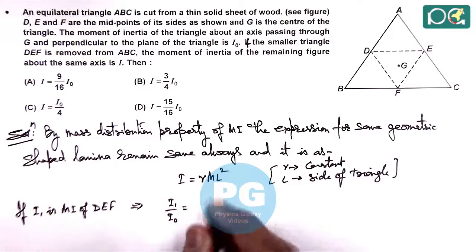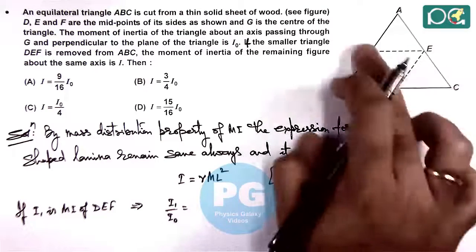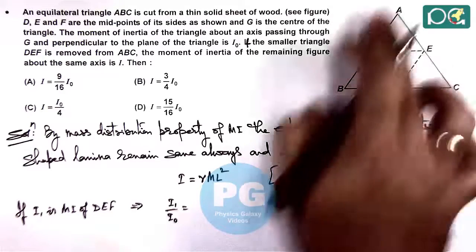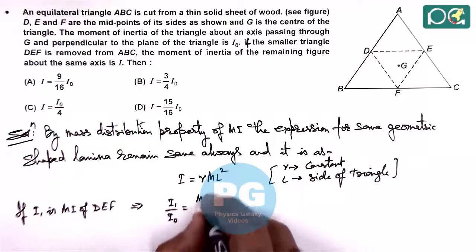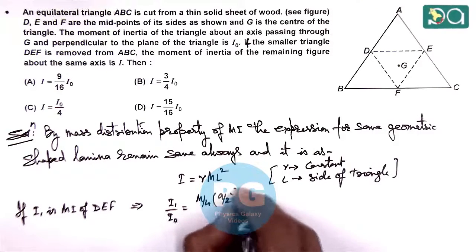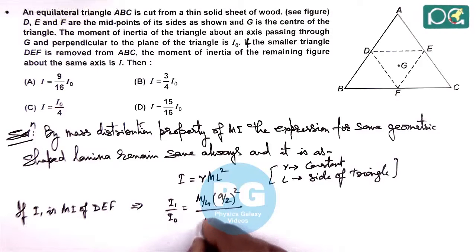As the area of triangle DEF is one-fourth of the total area, we can write it as M by 4 times A by 2 squared divided by, for I₀ it is MA².